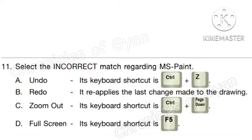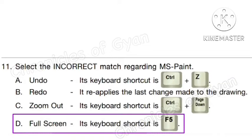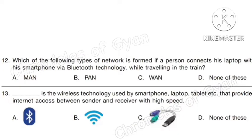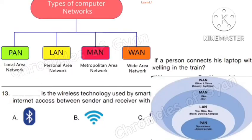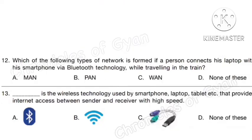Question 11. Select the incorrect match regarding MS Paint. The incorrect match is option D: full screen — its keyboard shortcut is listed as F5, which is incorrect. Question 12. Which type of network is formed if a person connects his laptop with his smartphone via Bluetooth technology while traveling on a train? Correct answer is option B: Personal Area Network.